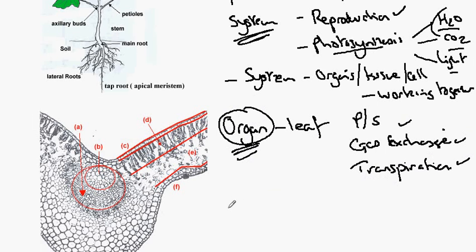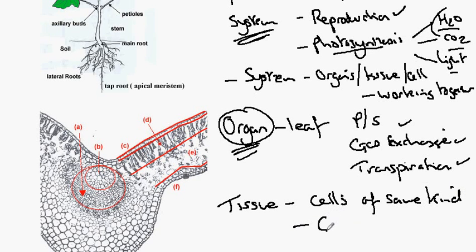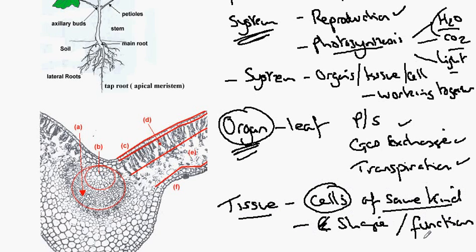Beneath the level of the organ is the level of organization known as the tissue. And tissues are cells of the same kind. We can tell that they are the same kind because they have the same shape. The same shape suggests that they do the same job, but the word job isn't used in biology. We use the phrase function. So a tissue is a group of cells of the same kind carrying out the same single function.